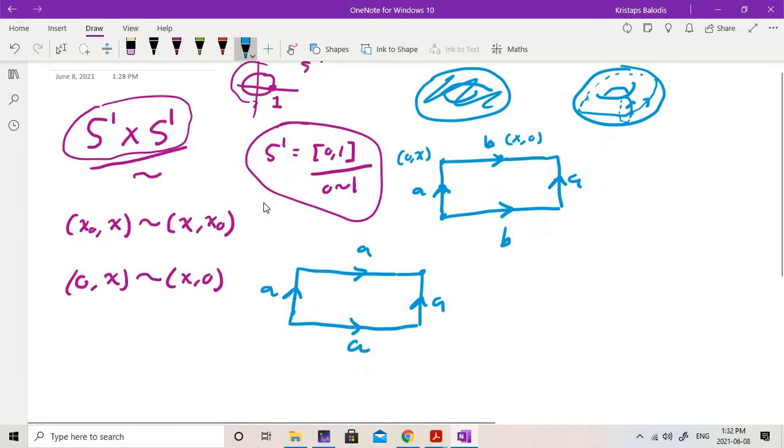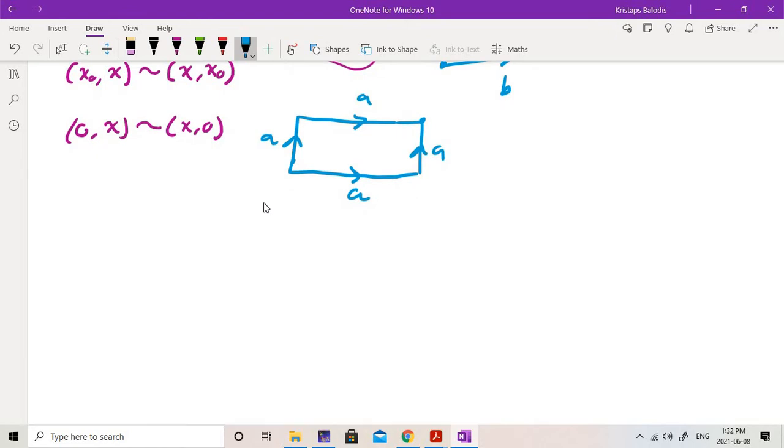And what we can do then is we can use the Van Kampen theorem, probably the best tool in basic algebraic topology. So what we're going to do is we're going to take a couple open sets. First, I'm going to take this open set U, and then I'm going to take this open set. So U is going to be, I should specify everything inside here, and my other open set V is going to be everything outside of this smaller circle. So they have to overlap a bit. That's going to be my set V.